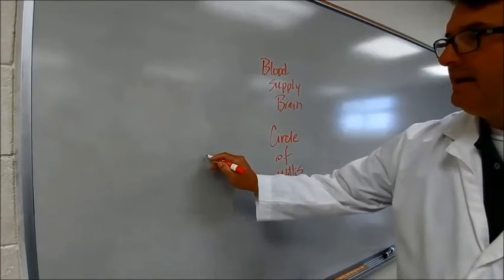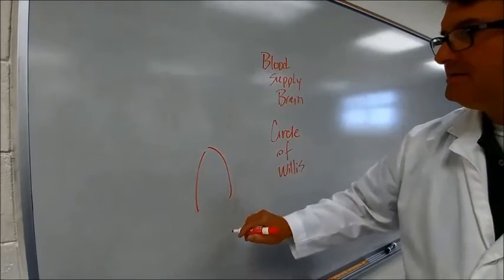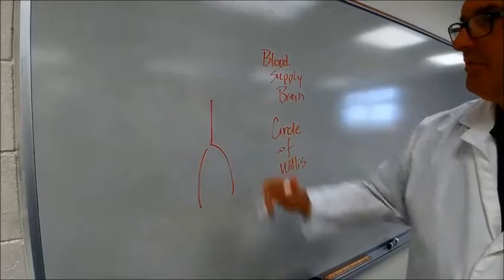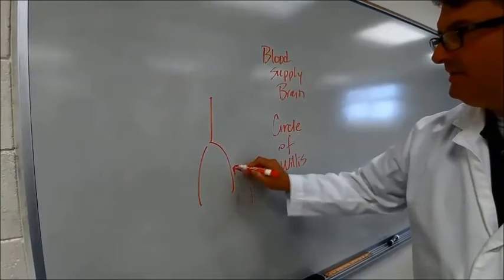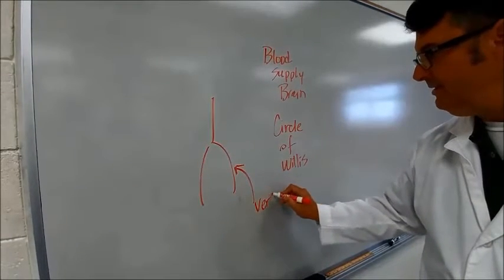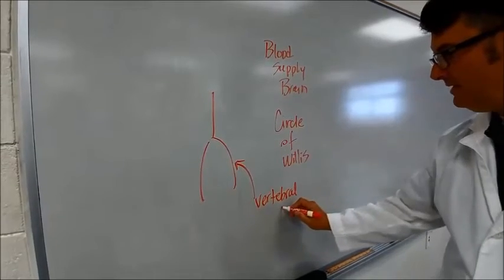Coming up through the neck are vertebral arteries. They merge to form a basilar artery. So, these are called vertebral arteries.